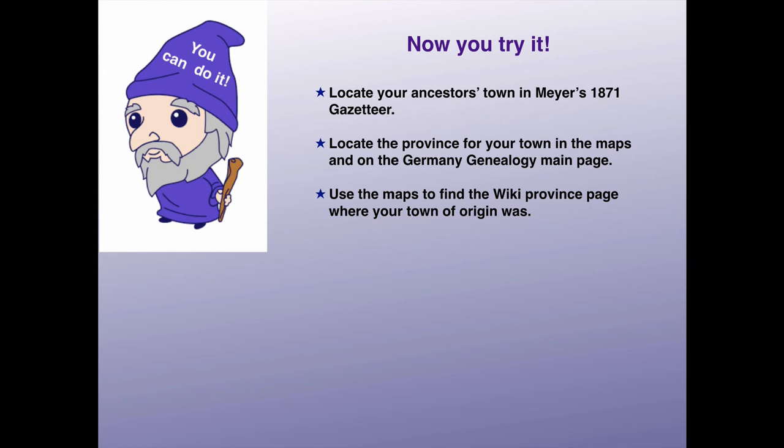Now you try it. Locate your ancestor's town in Meyers 1871 Gazetteer. Using the information from that gazetteer, check the three maps on the Germany Genealogy main page and locate your province in those maps. Now you have used the maps to find the wiki province page where your town of origin was. Go on to the next lesson where you will learn how to effectively use that province page.